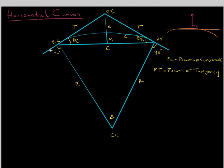The curve is tangent to the straight line right at the PC and the PT — hence the name point of tangency. T is your tangent — that's the distance from your PC to your PI, which is the same as the distance from your PI to your PT. That equal distance is called the tangent.